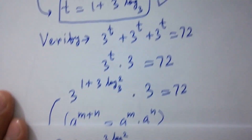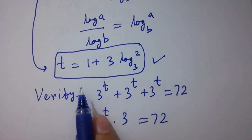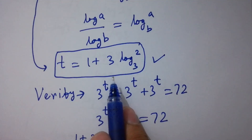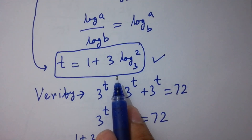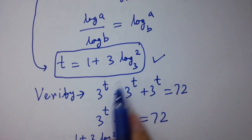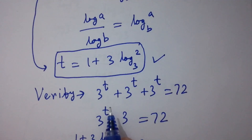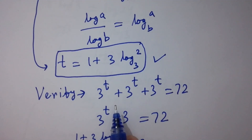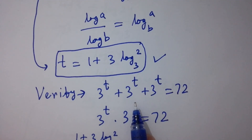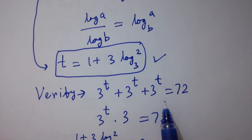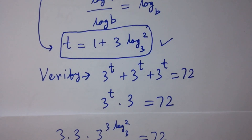So the value of t equal to 1 plus 3 log 2 to the base 3 satisfies the equation 3 to the power t plus 3 to the power t plus 3 to the power t equals 72. Thanks for watching this video, please subscribe to this channel to get notifications of my new videos. Bye.